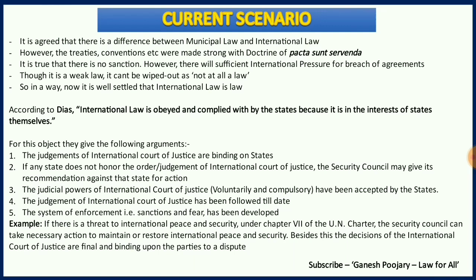According to Dias, international law is obeyed and complied with by states because it is in the interest of states themselves. He justifies this with five major arguments. First, the judgments of the International Court of Justice are binding on states. Second, if any state does not honor the order or judgment of the International Court of Justice, the Security Council may give its recommendation against such states for action. Third, the judicial power of the International Court of Justice has been voluntarily or compulsorily accepted by the states. Fourth, the judgments of the International Court of Justice have been followed till date. And fifth, the system of enforcement — that is, sanction and fear — has been developed over a period of time.